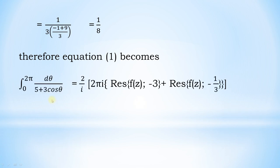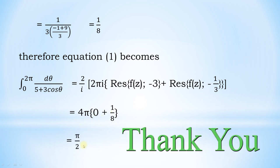Substituting into equation 1: ∫₀²π dθ/(5 + 3 cos θ) = (2/i) · 2πi · (0 + 1/8). The i's cancel, giving 4π · (1/8) = π/2. Thus the integral equals π/2, as required. Thank you.